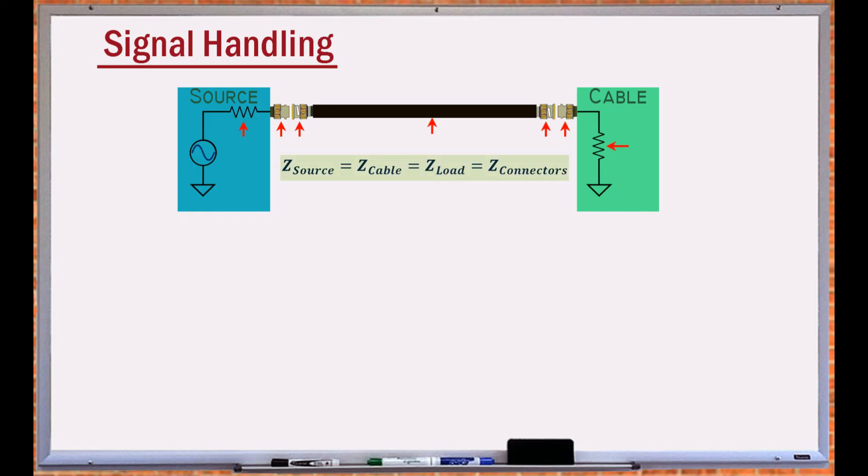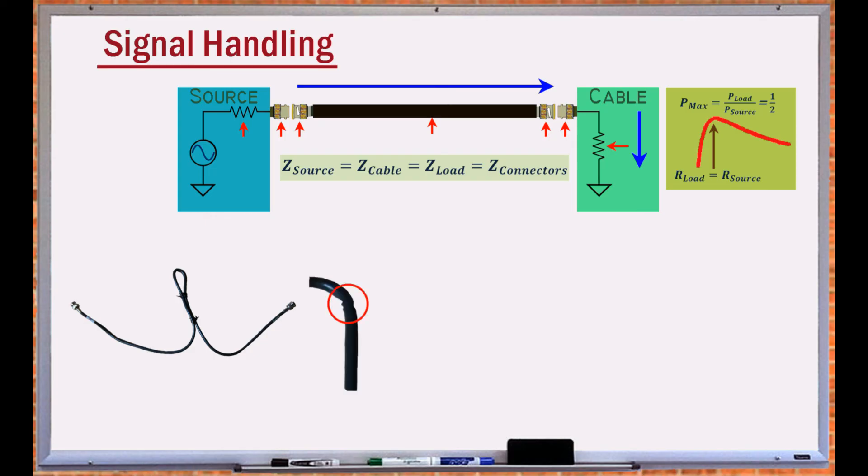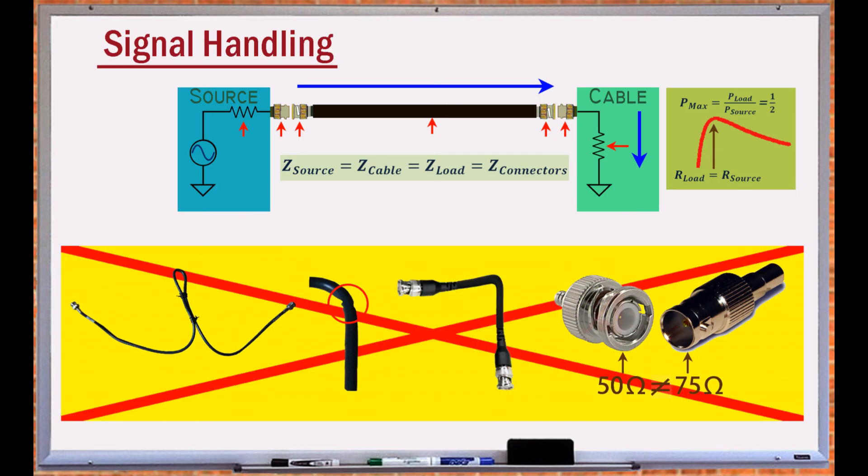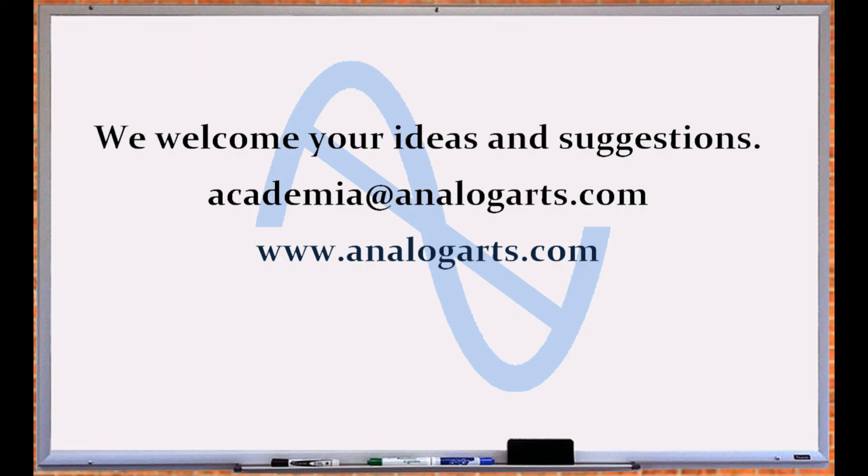Impedance matching maximizes the power transfer to the load and prevents reflection. Damaging a cable by twisting, bending, or kinking, or placing improper signal connectors in the signal path cause an impedance mismatch resulting in reflection, and consequently less than ideal signal handling. Thank you for watching.